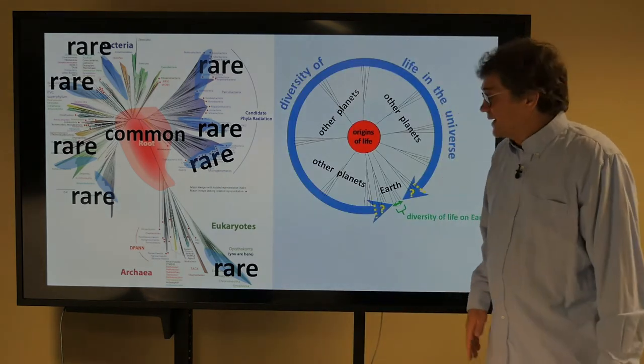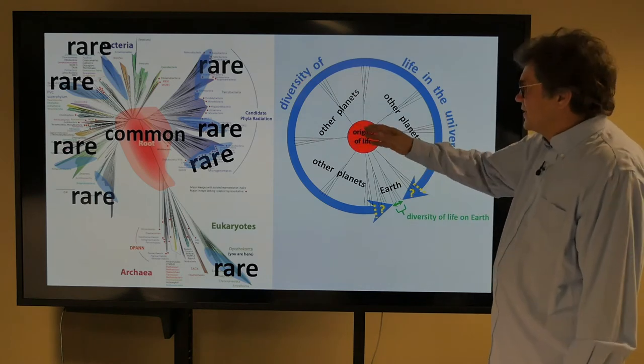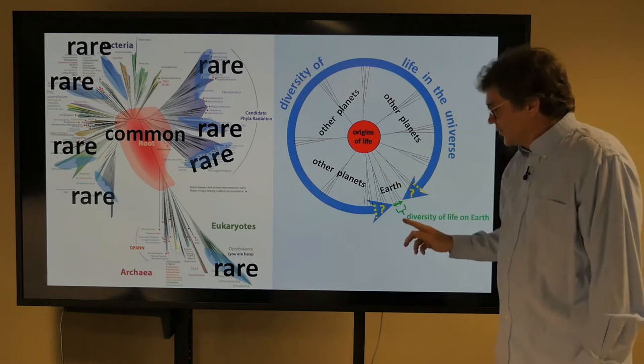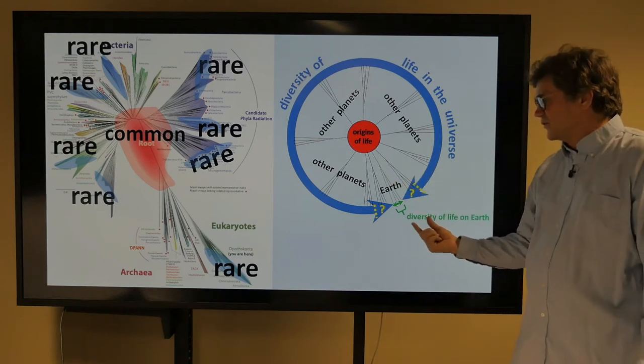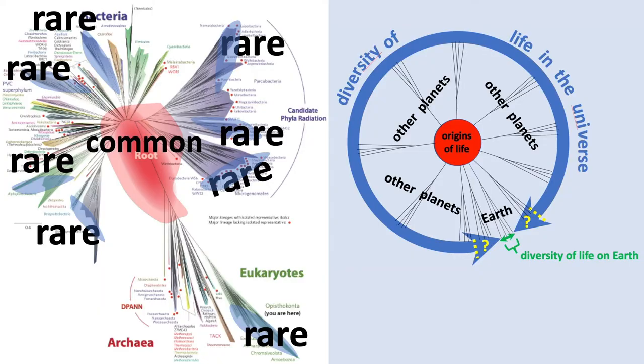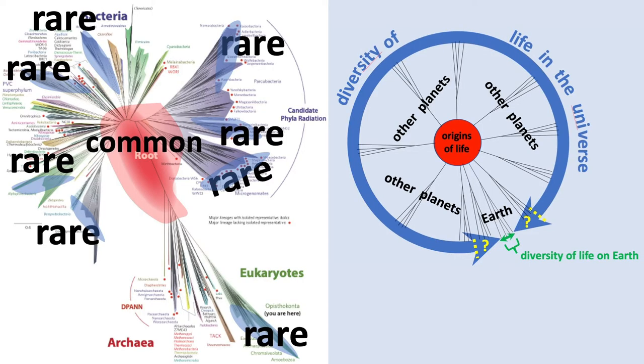So another way to look at that is, here's the origin of life, and these other planets produce life, and they produce the diversity of life in the universe. Here's the Earth, and here's the diversity of life on Earth. It's a tiny fraction of the diversity of life in the universe, but they all came from the same origins. So the basic principle that I think we can rely on is the closer we get to the origin of life on Earth, that's closer to the universality of life in the universe.